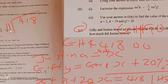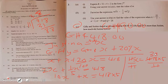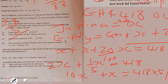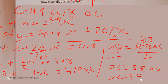Let's do the division: 418 divided by 11. 11 goes into 41 three times giving 33, remainder 8. Bring down the 8: 11 goes into 88 eight times. So 418 divided by 11 equals 38. Therefore X equals 38 times 5 equals 190.